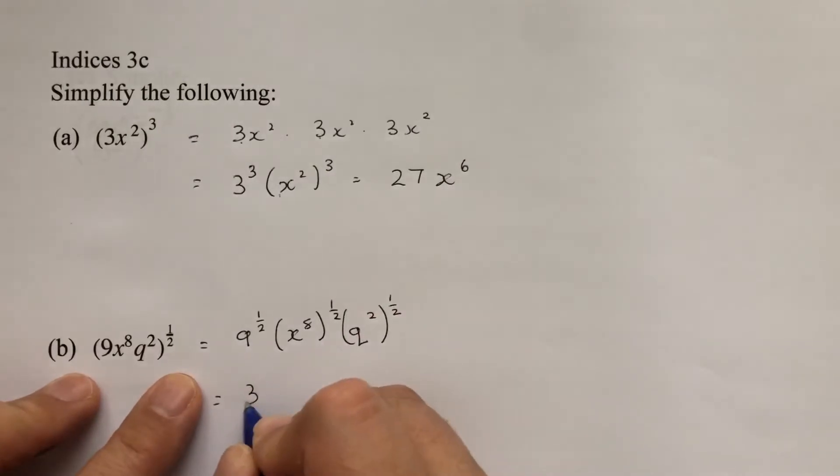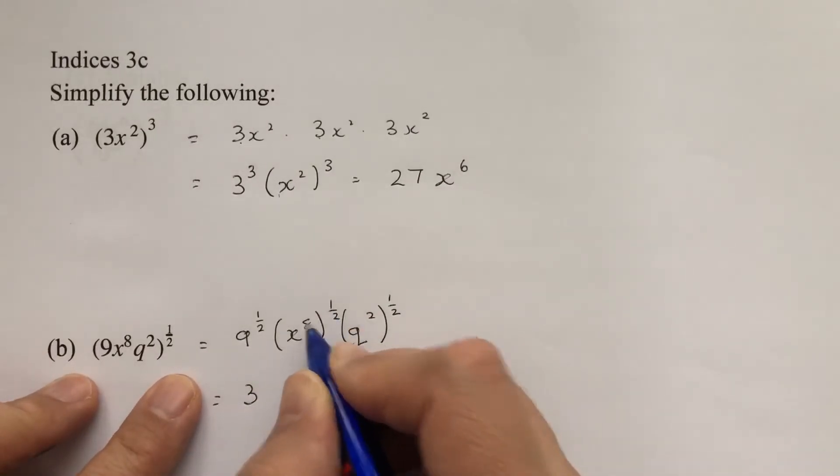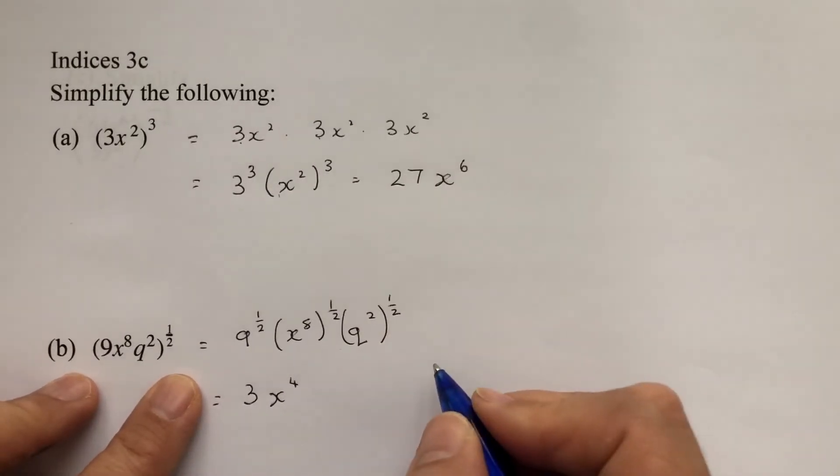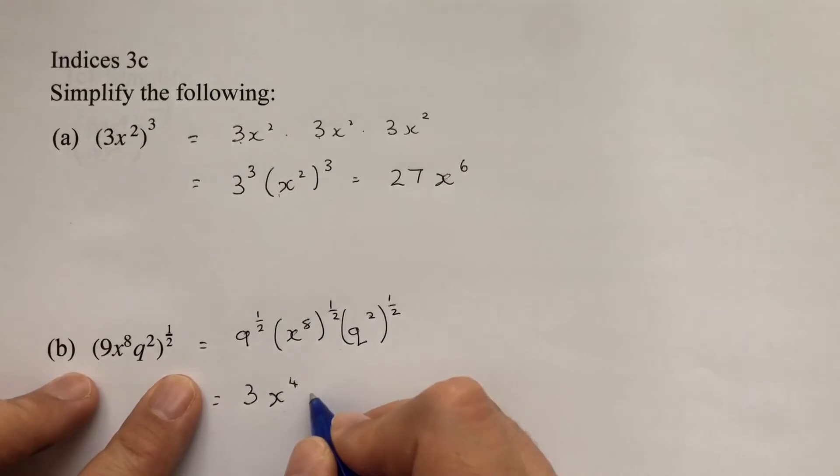So this is 3, these two multiply, because that's obviously square rooting, so that's just 3. These two would multiply to give you x to the power of 4, and these multiply to give q to the power of 1 or just q.